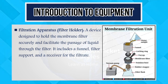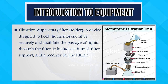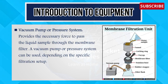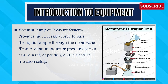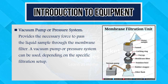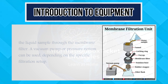The filtration apparatus includes a funnel, filter support, and a receiver for the filtrate. Third, vacuum pump or pressure system — provides the necessary force to pass the liquid sample through the membrane filter. A vacuum pump or pressure system can be used depending on the specific filtration setup.